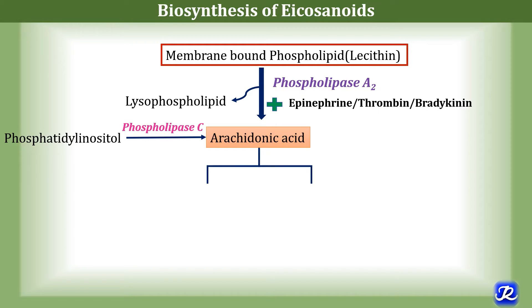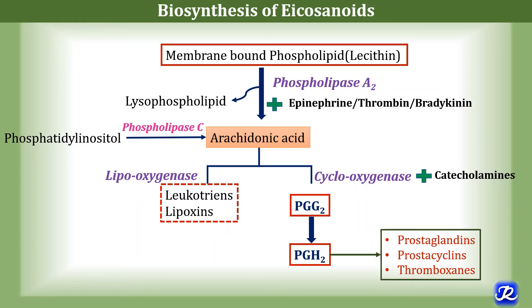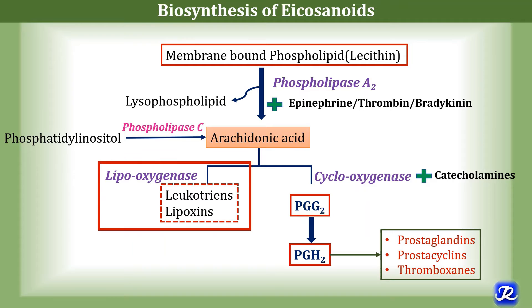Arachidonic acid is later acted upon by either cyclooxygenase or lipoxygenase. If cyclooxygenase acts on arachidonic acid under the influence of catecholamines, there is production of intermediate prostaglandins like PGG2 and PGH2, which later acts as a precursor of various prostaglandins, prostacyclins and thromboxins — as discussed in the previous video. If lipoxygenase acts on arachidonic acid, it results in the formation of leukotrienes and lipoxins, which we study in this video.